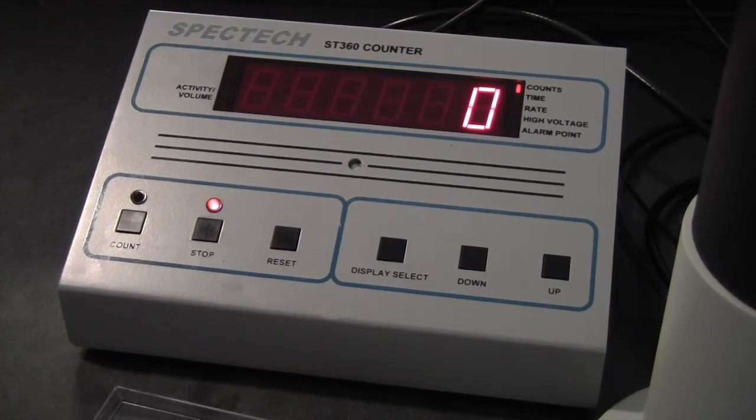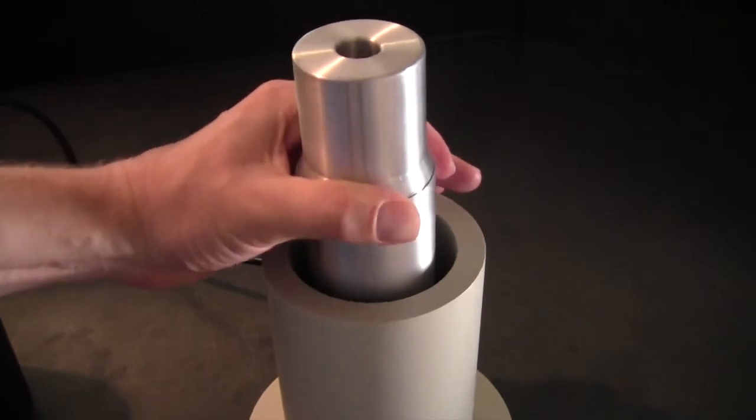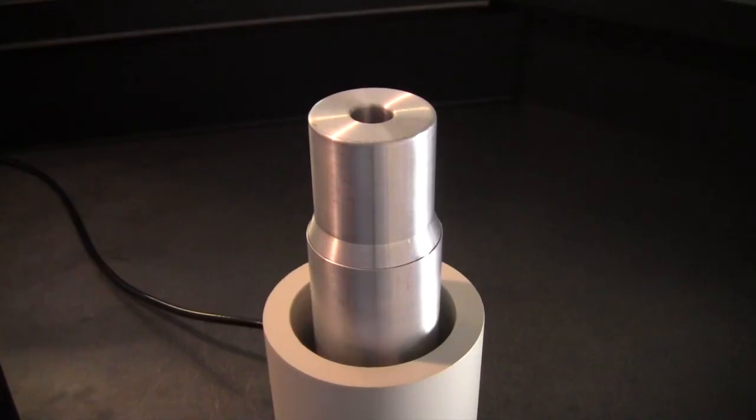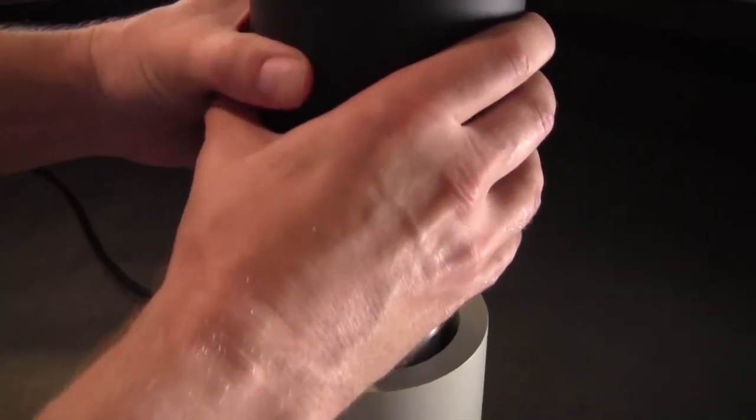Now to assemble the unit, gently mount the detector into the stand. Line up the prongs with the holes inside the stand very gently and ease it in. Even more gently, lower the shield onto the detector. The detector is very fragile.